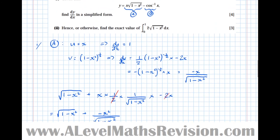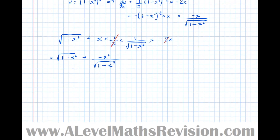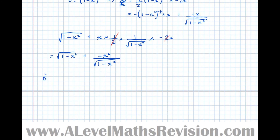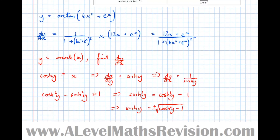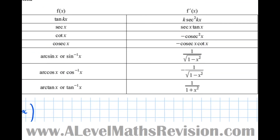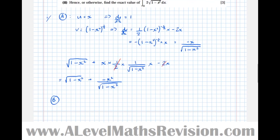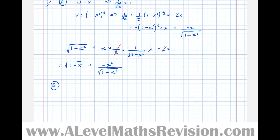Now we subtract the differential of arccos x. From the formula sheet, the differential of arccos x is −1/√(1 − x²). So we take away −1/√(1 − x²).